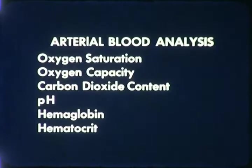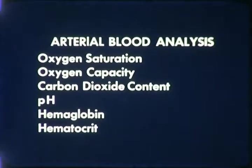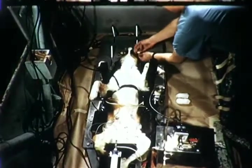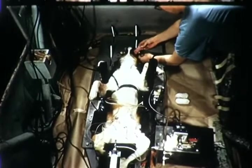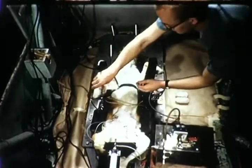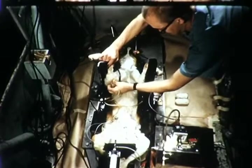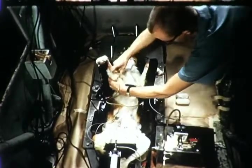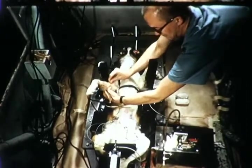The blood is analyzed as shown in this chart. After induction of a light plane of anesthesia, two femoral artery catheters and one superior vena-caval catheter were inserted prior to placing the subject in the restraint system. The endotracheal tube airway is checked, and here the electrocardiographic leads are inserted subcutaneously and secured.